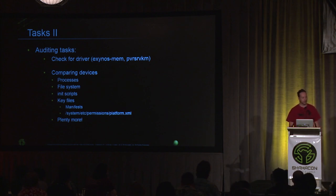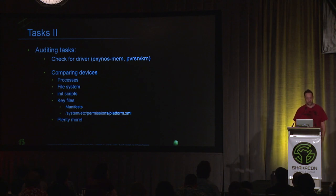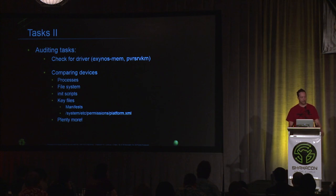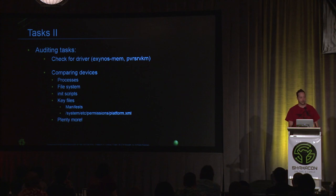Other things you can do are compare devices' running processes and file systems. You might find one device has a set-UID binary another doesn't, or a subdirectory of /data with insecure permissions. It will really point out system applications that are pre-installed with special privileges — those stand out a lot when you start diffing things, especially processes. Any services that OEMs add on top of vanilla Android will pop out quickly. Comparing OEM devices to a Nexus device of a similar generation is really nice because it shows all the modifications made along the way.